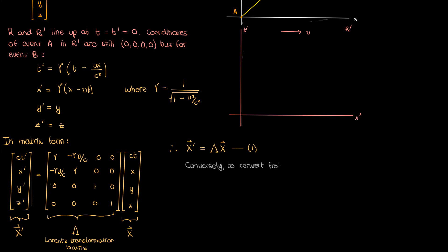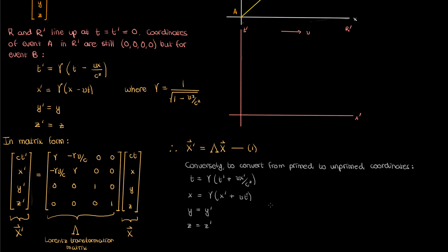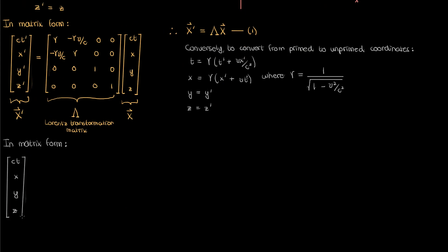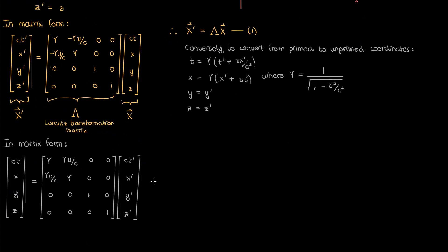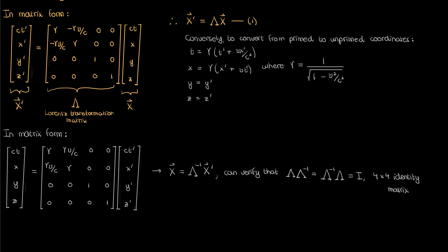Similarly, if we want to convert from the primed coordinates to the unprimed coordinates — the reverse conversion — we can just use the inverse Lorentz transformation equations, which I first showed in my previous video on Lorentz transformations. Gamma is the same Lorentz factor. If I put these inverse Lorentz transformation equations into vector and matrix form, I get my unprimed coordinates on the left and this matrix multiplying my primed coordinates on the right. This matrix is the inverse Lorentz transformation matrix, denoted by capital lambda inverse. So in terms of capital lambda inverse, the inverse transformation rule for the displacement four vector is as follows. You can verify that the product of the inverse Lorentz transformation matrix and the Lorentz transformation matrix itself is just the 4x4 identity matrix, which is what we want and expect.